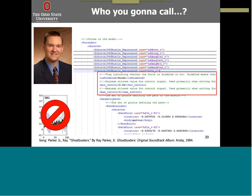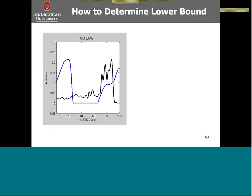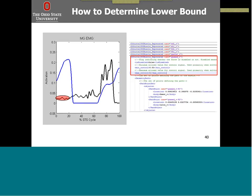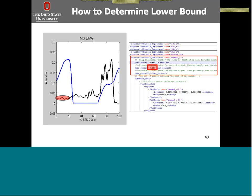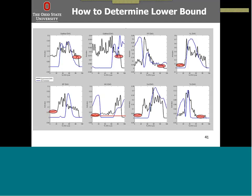How did I set these bounds? I looked at the experimental EMG and found what its lowest value was across the entire sit-to-stand trial. I didn't want to choose zero, since having zero activation is exactly what we want to avoid. For the medial gastrocnemius, I went into the Notepad++ file for that particular muscle and changed the default value of 0.02 to that lower bound value, which was around 0.036. I did this for all the muscles that I had EMG data on, setting that lower bound across the entire sit-to-stand cycle.